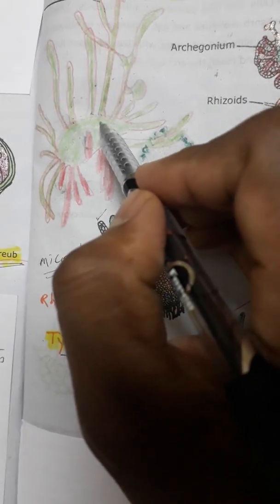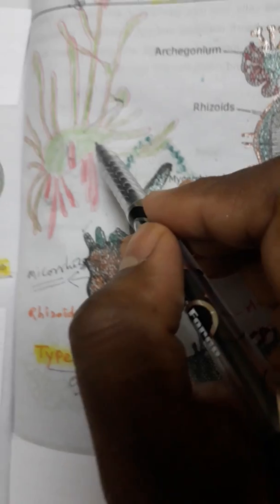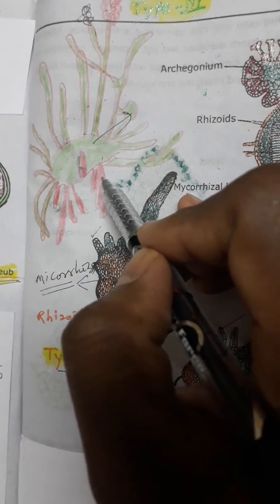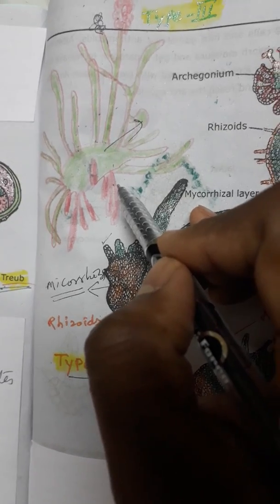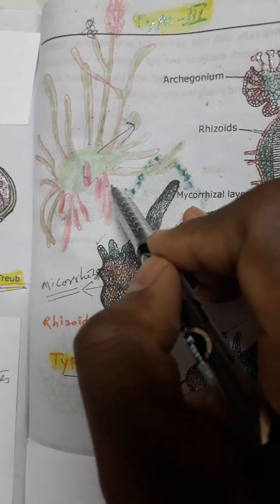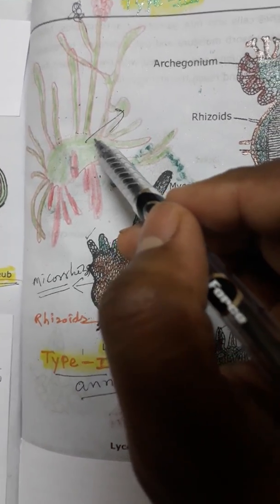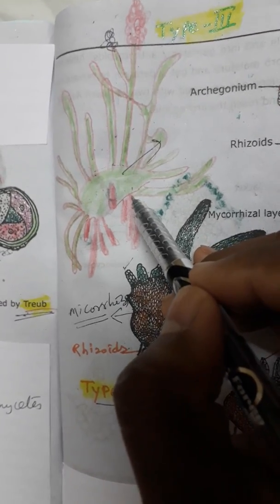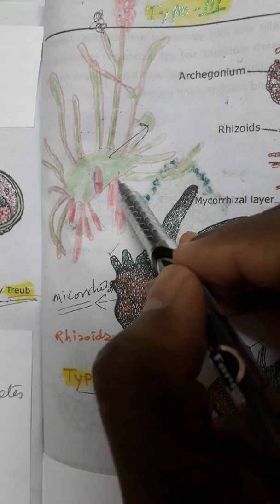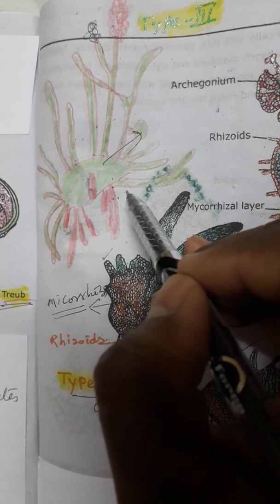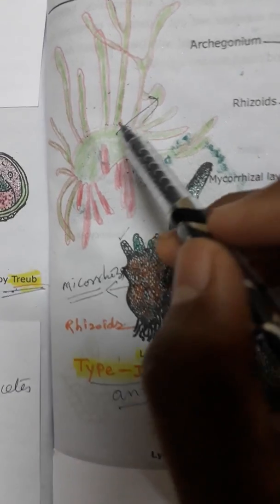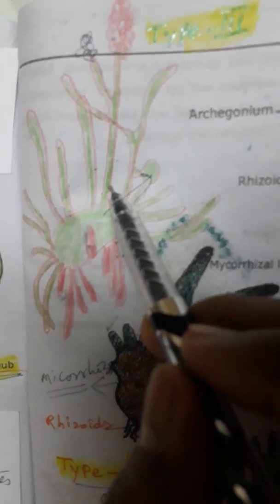It has mycorrhiza. The mycorrhiza collects humus on decaying bark because it is growing on plant trunks, woody trunks. The rhizoids are absorbing collection of humus and minerals on the decaying bark. This is Lycopodium phlegmaria.